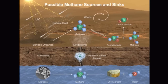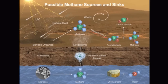Methane can be generated from the action of solar ultraviolet radiation on surface organics. Cosmic dust in the form of interplanetary dust particles and micrometeoritic particles is a good source of surface organics.